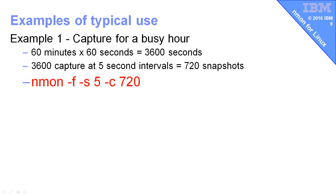Let me give you two examples. Perhaps you have a classical Dolly Parton curve during the day — busy at 11 o'clock in the morning and 2 o'clock in the afternoon. So you want to capture one of those busy hours to see what's going on. We want to capture for an hour: 60 minutes and 60 seconds is this number of seconds. Let's go for a five-second interval and we end up with 720 snapshots. That's slightly over 600, but we can deal with that. So the time between snapshots is five seconds, count 720 — we'll wait for the hour for it to complete that capture and then we have our data to graph.